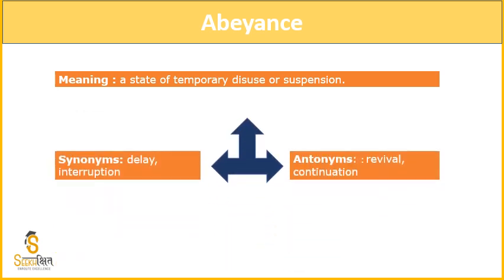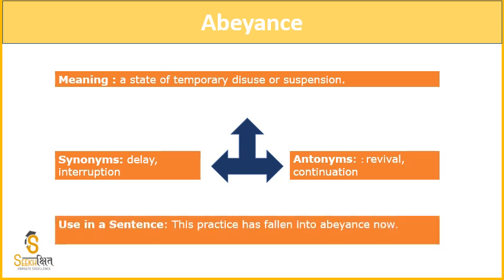Synonyms for abeyance are 'delay' and 'interruption' — an interruption has happened, which is why there is a suspension. Antonyms are 'revival' and 'continuation' — revival means bringing something back to life, like when gyms reopen they will revive. The example sentence is: 'This practice has fallen into abeyance now' — often used in the context of law firms, meaning a practice that has stopped right now and is currently in abeyance.